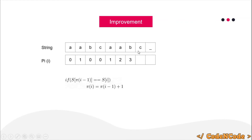The question remaining is: what happens when the last character does not match — when s of pi of i minus one is not equal to s of i? The lecture will stop here and the next part will be uploaded tomorrow. If you have any doubts or queries, ask in the comment section below. Thank you for watching, and until the next video, keep coding.